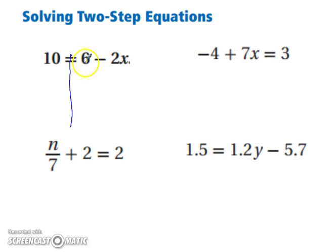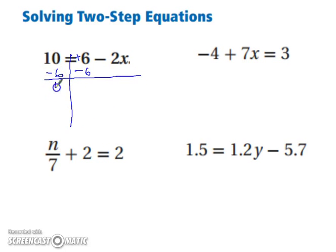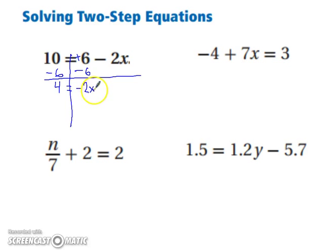Are we going to add six or subtract six? Keep in mind, the sign in front is a positive six. So to undo that positive six, we're going to subtract six from both sides of the equation. That leaves us with four on the left-hand side of the equation and negative two x on the right-hand side. We're not done yet — to solve, you need to get x entirely by itself. So we have negative two times x.